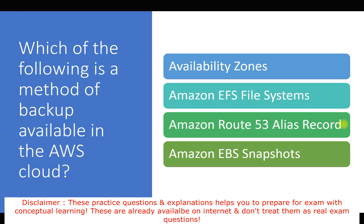If we talk about Amazon EBS snapshot — EBS is a block-based storage, like a virtual hard disk for EC2 instances. We can back up our EBS volume attached to our instances using snapshots. EBS snapshot is a backup method that provides point-in-time backup for data related to EC2 instances. So for this question, the answer is Amazon EBS snapshot.